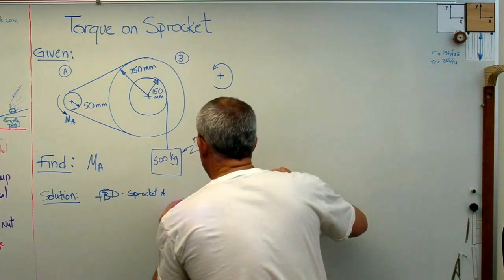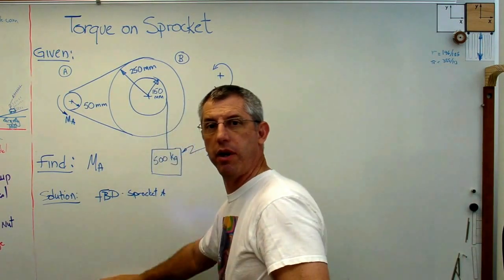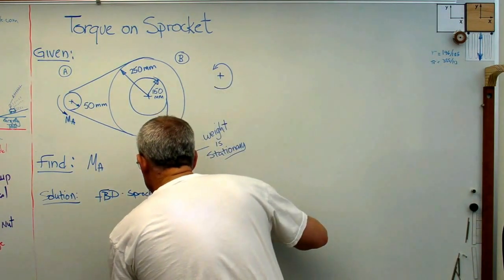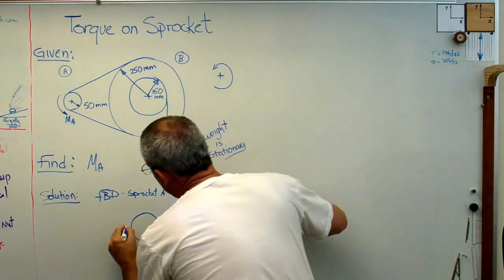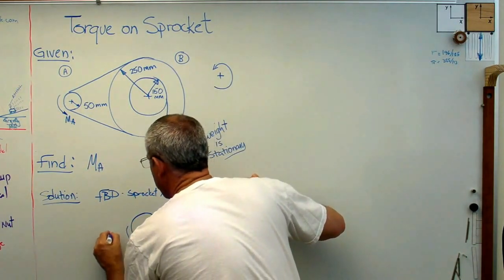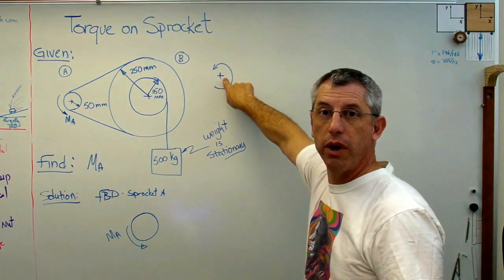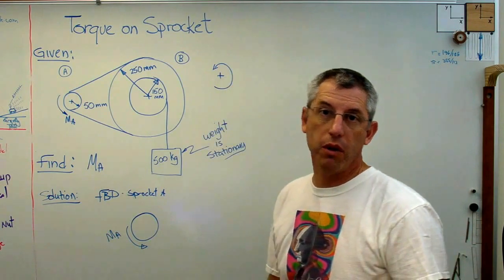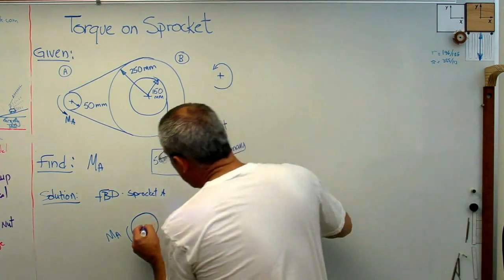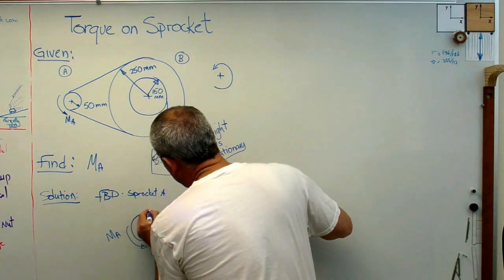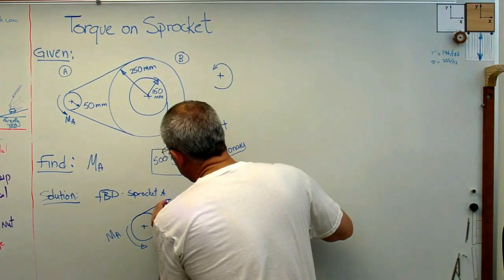Well, that should be pretty straightforward. Let me make sure I stay in frame here. Okay, I'm good. I've got my sprocket there, and I've got moment in that direction. I'll call that moment A. And I've just decided that counterclockwise is positive. I normally use counterclockwise positive, so I'll use it here as well. And I've got the center there. Okay, and I've got the tension in the chain.